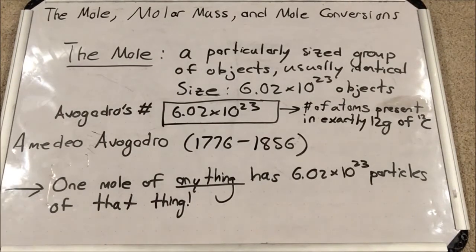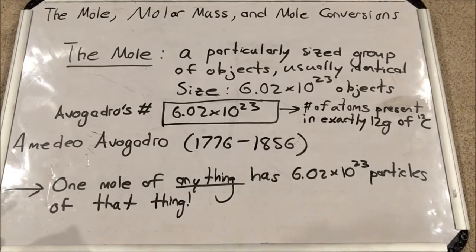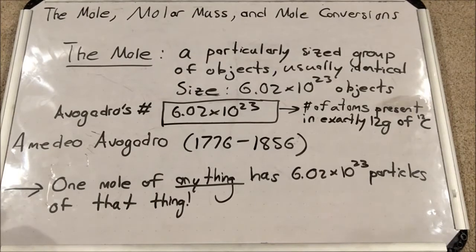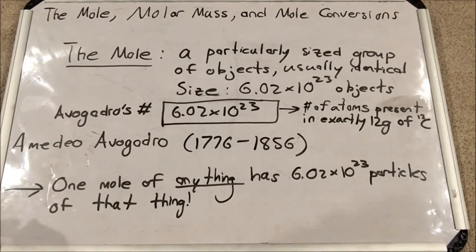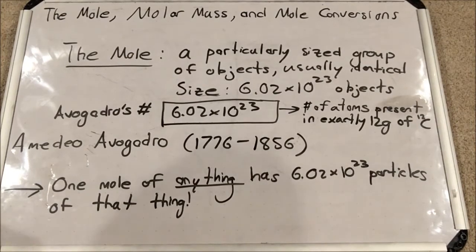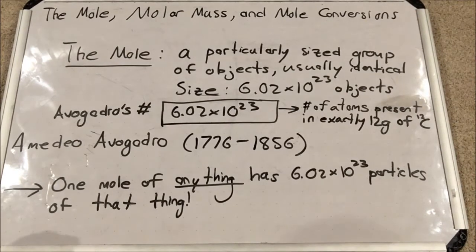So what is the mole? The mole is a particularly sized group of objects, usually identical objects — a way to categorize a giant group of objects. For small particles like atoms and compounds, it's very useful especially in chemistry. This particular group has a size, and that size is 6.02 times 10 to the 23 objects.